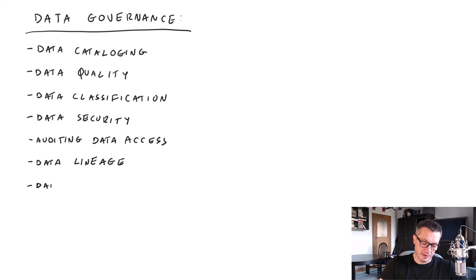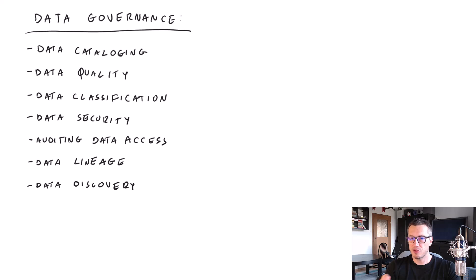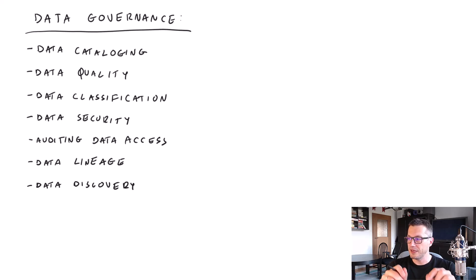We also have data discovery, which is somehow related to the data catalog. It's great that we have a lot of data assets, but what if you are starting a new project and you need some source data? How can you tell if that data is already available somewhere in your company — maybe some other project already ingested it to a data lake and you could use it? Data discovery is about how easy it is to find the datasets that are available in your company.